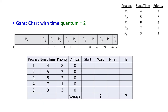Now let us try to solve this problem by drawing the Gantt chart. The given time quantum is 2 milliseconds. The first priority is assigned to process 4. Hence, without any interruption, process 4 will get executed. The starting time is 0 and the finish time is 7. Because P4 has the highest priority, it will execute without any interruption.